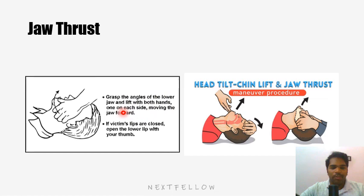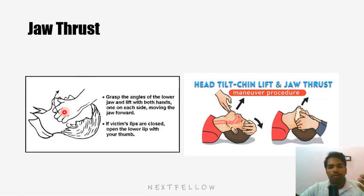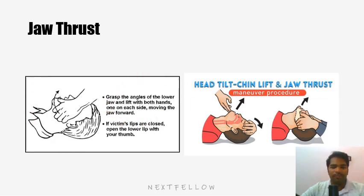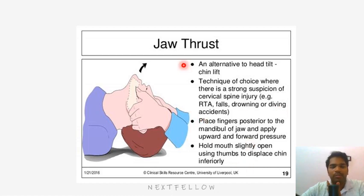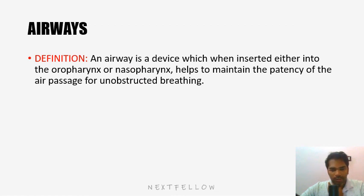For jaw thrust, grasp the angle of the lower jaw and lift with both hands, one on each side, moving the jaw forward. If the victim's lips are closed, open the lower lip with your thumb to provide more space for air. Use head tilt and chin lift when you are sure there is no cervical fracture; use jaw thrust when you suspect one — for example, following RTA, fall, drowning, or diving accidents.